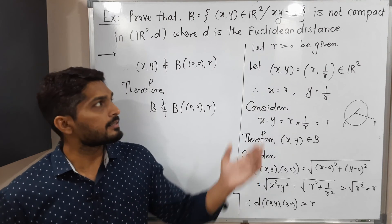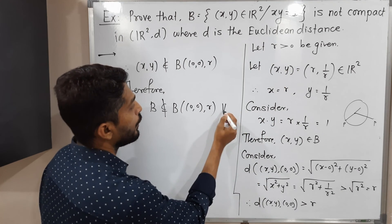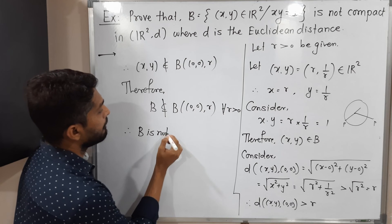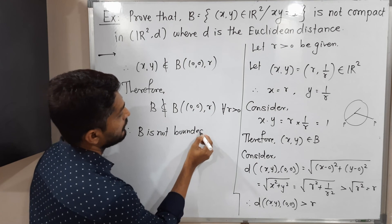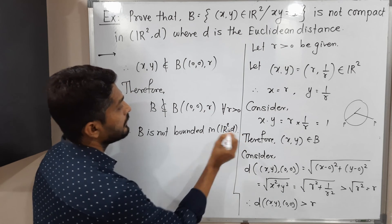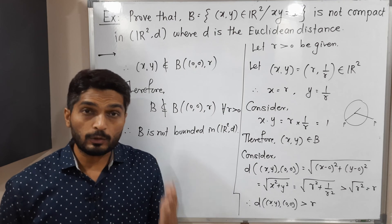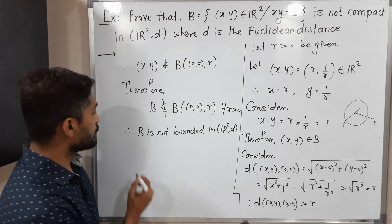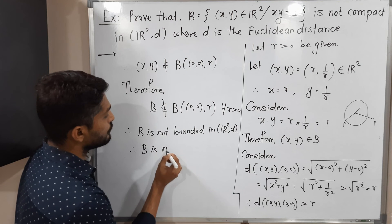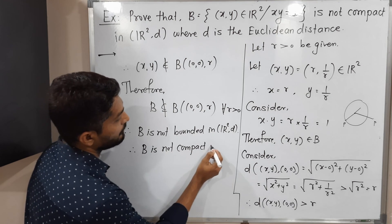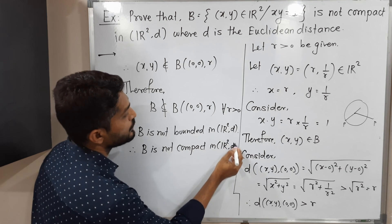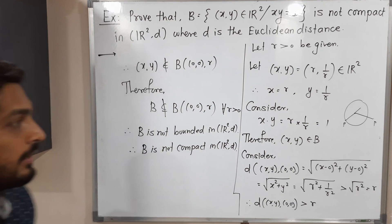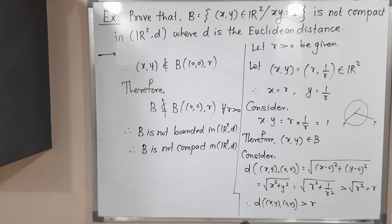Since R > 0 was arbitrary, we have shown that for every R > 0, B is not a subset of the ball with center (0,0) and radius R. Therefore B is not bounded in R²D. For a set to be compact in R²D, it must be closed and bounded, but this set is not bounded. Therefore B is not compact in R²D, where D is the Euclidean distance.